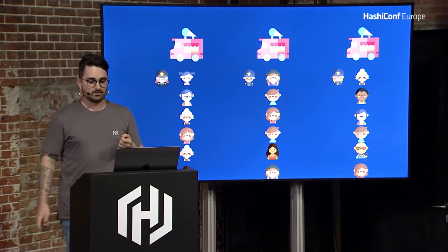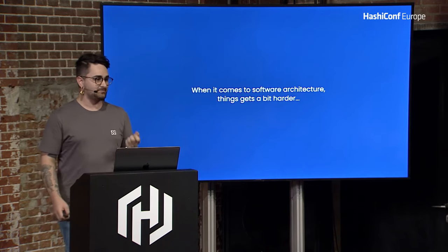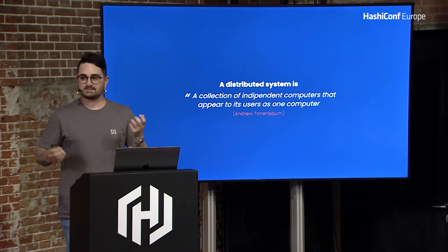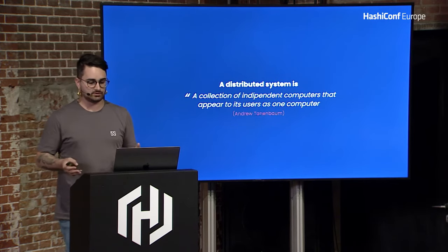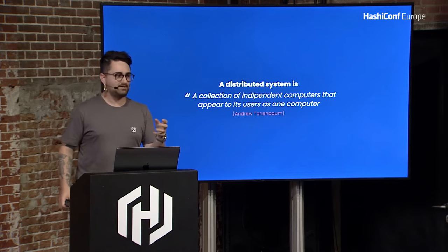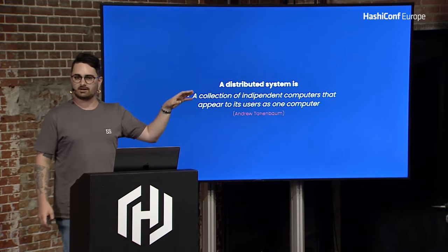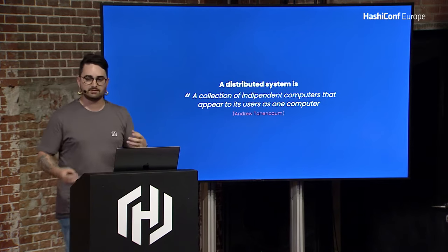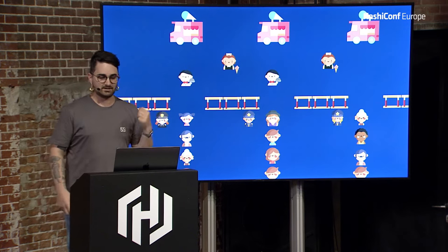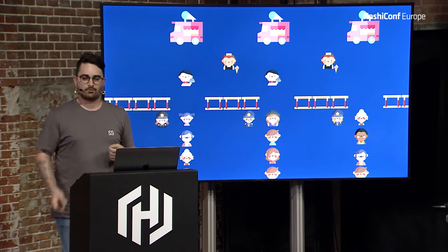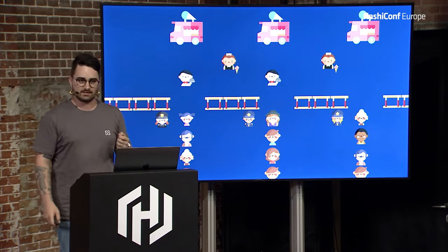When it comes to software architectures, things get a bit harder. This is where we want to introduce the concept of distributed systems. A distributed system, by its definition, is a collection of independent computers that appears to its users as one computer. It doesn't really matter if we have 10 ice cream trucks, 100 ice cream trucks, or one single ice cream truck. To the final user, what matters is the speed and the possibility to ask for many different ice creams at the same time. To call a system distributed, it needs to respect three distinct rules.